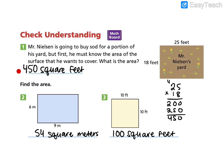For number 1, we find the area of the yard is 450 square feet. You can see my multiplication right here. Number 2, the area is 54 square meters. Notice the M. And 3 is 100 square feet.